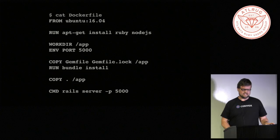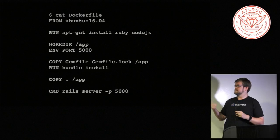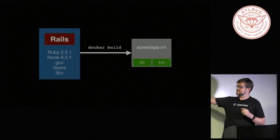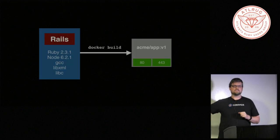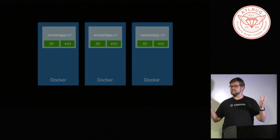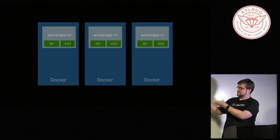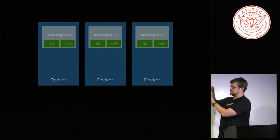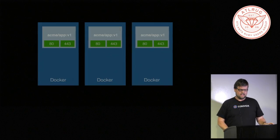The way Docker does this is through a Dockerfile. You put this right inside your repository. A simple Dockerfile says: start with Ubuntu, install Ruby and Node, set the working directory to /app, run bundle install, copy all your files into /app, and specify the command to start the server. This codifies all the things that are not your application but that your application needs to run, packaging it into a standalone image.